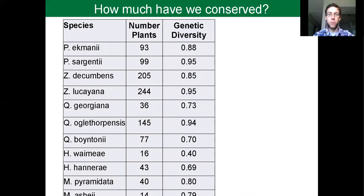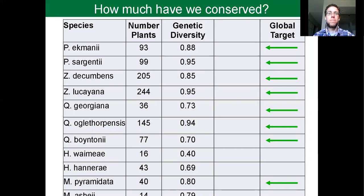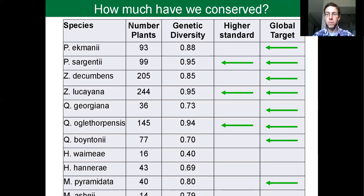This is the fraction of genetic diversity conserved, from 0 to 1. The Global Strategy for Plant Conservation states that at least 70% of a species' genetic diversity should be conserved ex situ. We see that most of our species are meeting that goal. However, geneticists might recommend a more stringent threshold of 90 to 95%. In this case, we see that only a few of the taxa we examined are meeting this higher threshold.